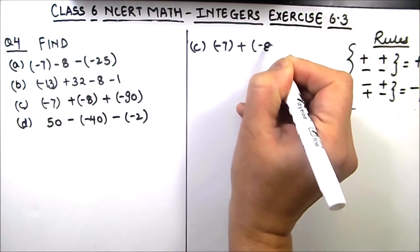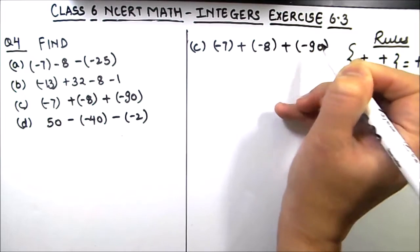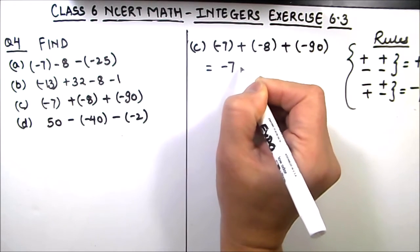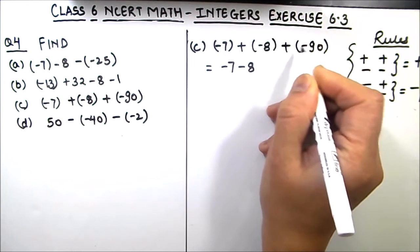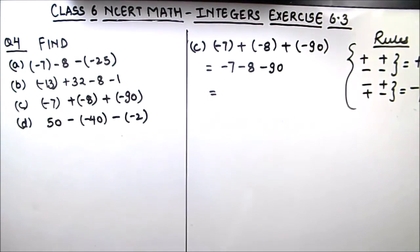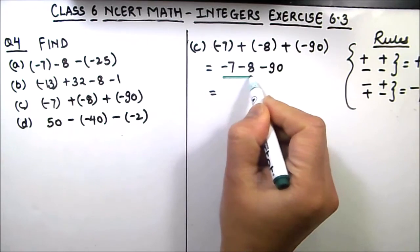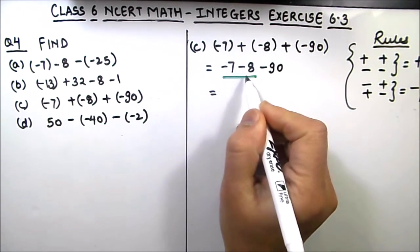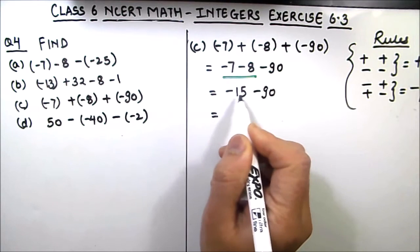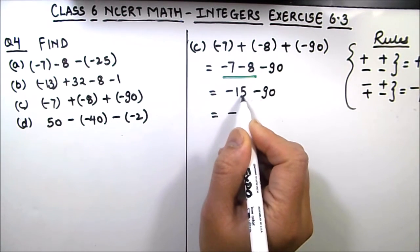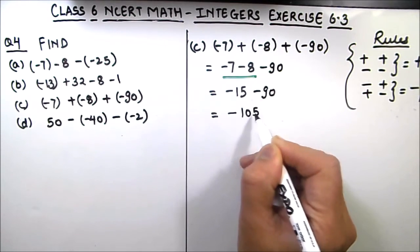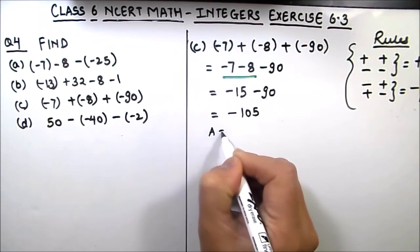For part C: minus 7 plus (minus 8) plus (minus 90). Opening the brackets: plus and minus gives negative, so this becomes minus 7 minus 8 minus 90. Moving left to right, minus 7 and minus 8 have the same sign, so we add: 7 plus 8 is 15, giving minus 15. Then minus 15 and minus 90 — same signs again, so we add: 15 plus 90 is 105. Our final answer is negative 105.